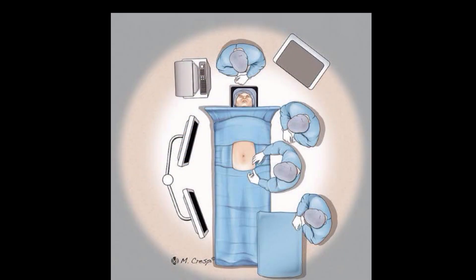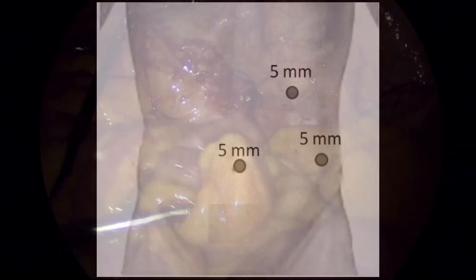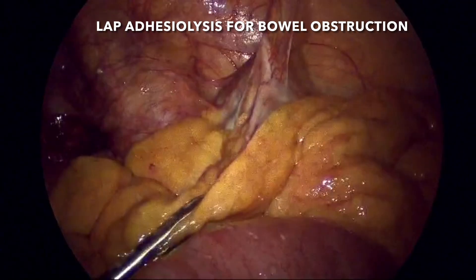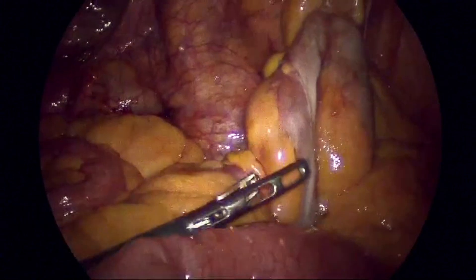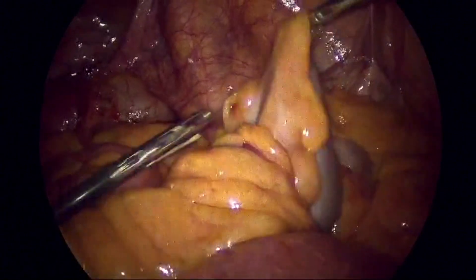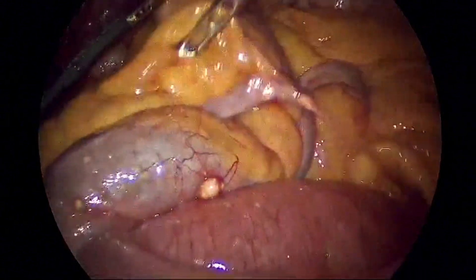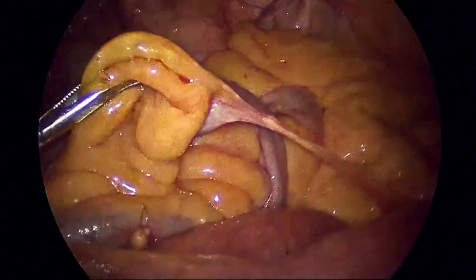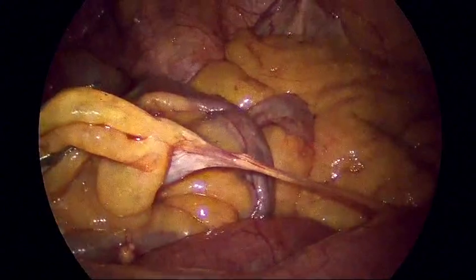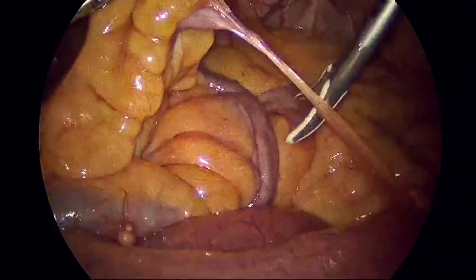The patient is in supine position. We did a 3-port diagnostic laparoscopy with 5 mm ports. This is the ileocecal junction. We should try not to hold the bowel directly; instead, hold the fat surrounding it. Here is the first band, which was going from the ileum to the area of the colon.